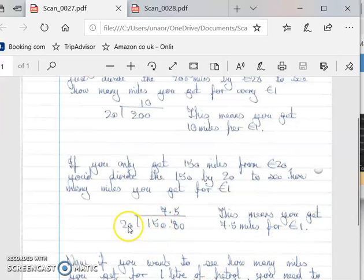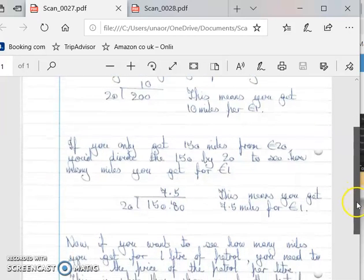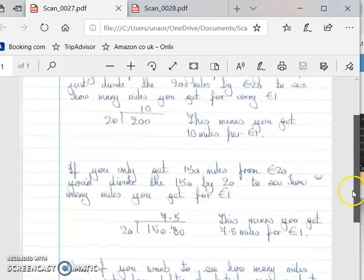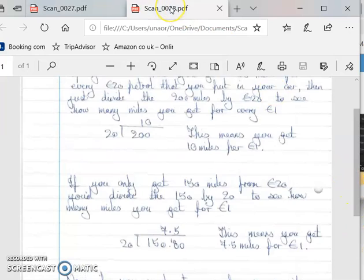So now you get 7.5 miles for every euro instead of 10 miles for every euro. By the way, with this division you can do that on a calculator—you don't have to do this out longhand. Problem solving kind of assumes you know how to do this already. Down here I talk a little bit about how to figure out how many miles you get per liter, but I really don't think that's important so I'm going to skip on to this page.